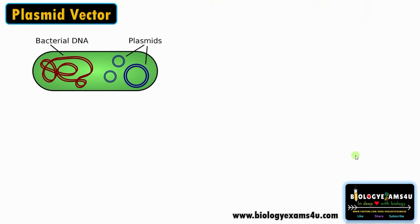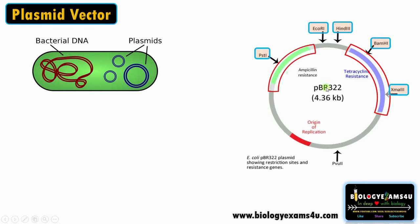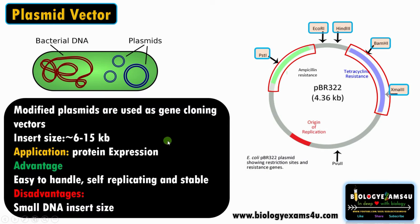The first vector is plasmid — extra-chromosomal double-stranded circular DNA molecules present in bacteria. Genetically engineered plasmids are widely used as gene cloning vectors. PBR322 has an ORI, two selectable markers — ampicillin-resistant and tetracycline-resistant regions — and many unique restriction sites, including restriction sites within selectable markers. It can carry an insert size of approximately 6 to 15 kb and helps in protein expression inside the host. The advantage is it is easy to handle, stable, and replicates easily inside the host. The major disadvantage is it can carry only small fragments up to 15 kb.